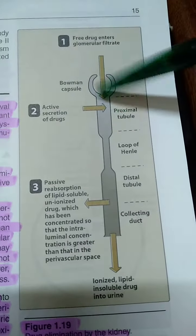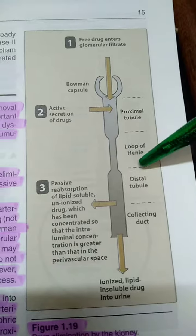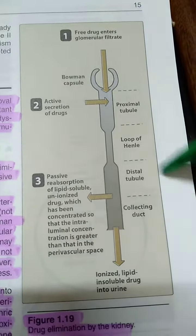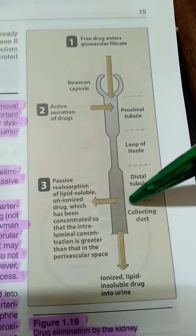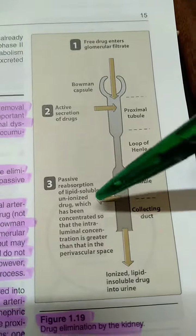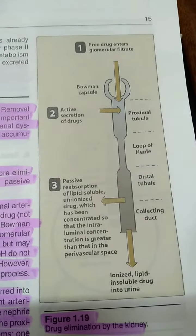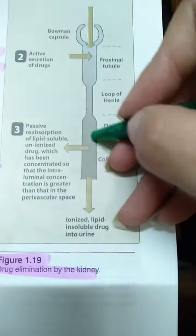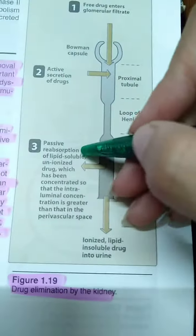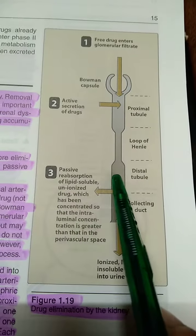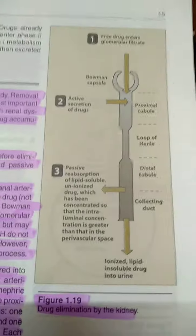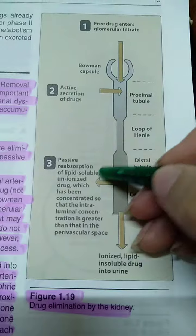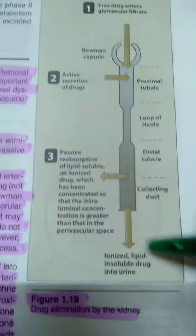From the proximal tubule, the drug passes into the loop of Henle, and from there into the distal tubule, marking the start of the third step — passive tubular reabsorption. For example, if the concentration of the drug inside the distal tubule is 2 mg and on the outside it is 1 mg, it will move from the area of higher concentration to the area of lower concentration — out from the distal convoluted tubule into the blood.